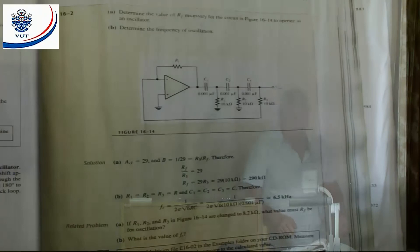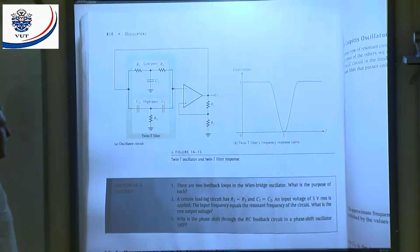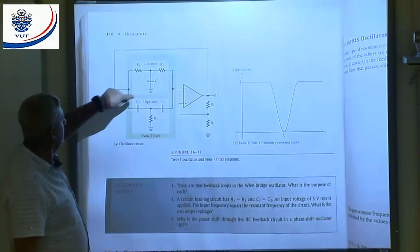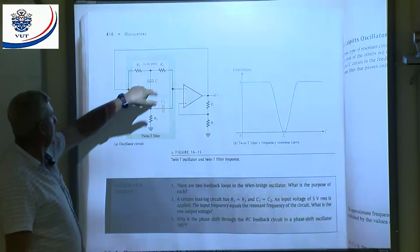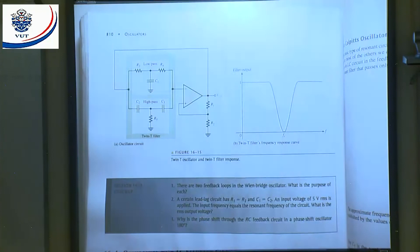The twin-T oscillator: this forms a band-attenuation filter with my resonant frequency. One part is a low-pass filter and the other is a high-pass filter — they call it a T-type filter because it's shaped like a T. The response is a band-attenuation filter with the resonant frequency at the notch.